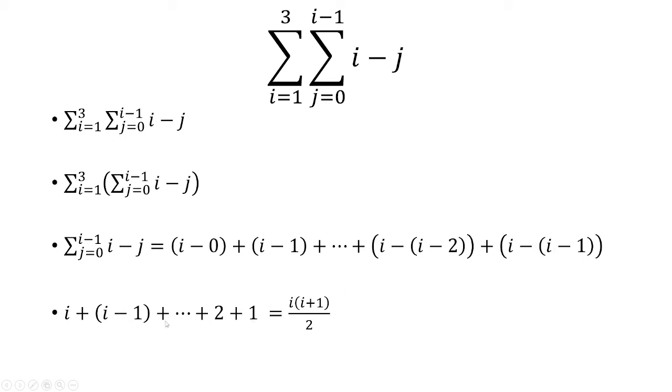So what we're doing here is just adding the numbers 1 all the way up to i. And the formula for that is just i times i plus 1 over 2.